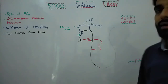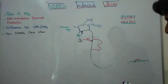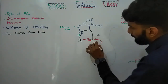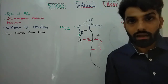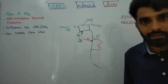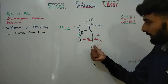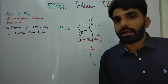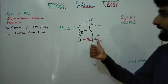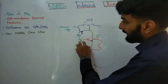So prostaglandins, by increasing secretion of bicarbonate and mucus, are basically protecting these epithelial cells from the harmful effect of gastric acid. On the other hand, prostaglandins will also act on receptors present on the parietal cells, and when they act on parietal cells they will decrease HCL secretion. Parietal cells are responsible for the synthesis and secretion of HCL. So prostaglandins decrease acid secretion, again protecting the epithelial cells.